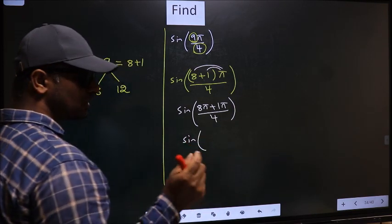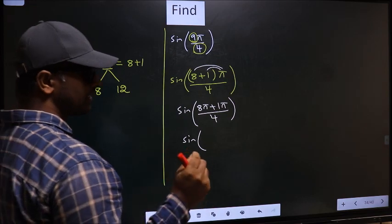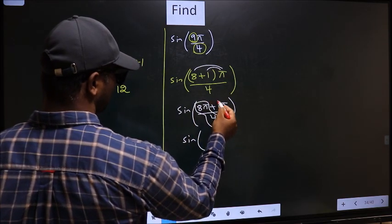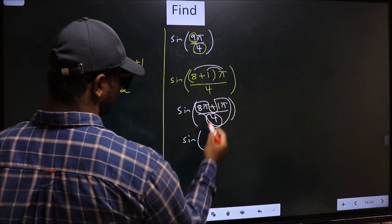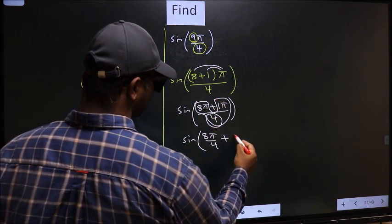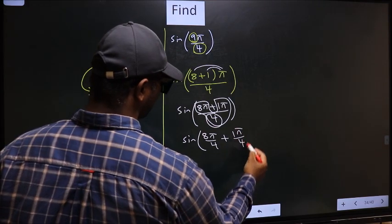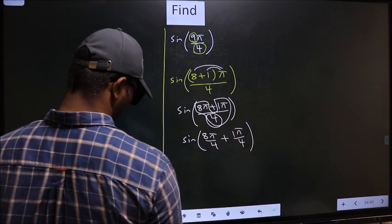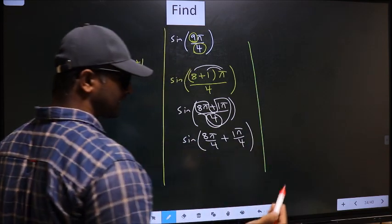Now, sine of—you should split the denominator in this way. That is, 8π/4 plus 1π/4.